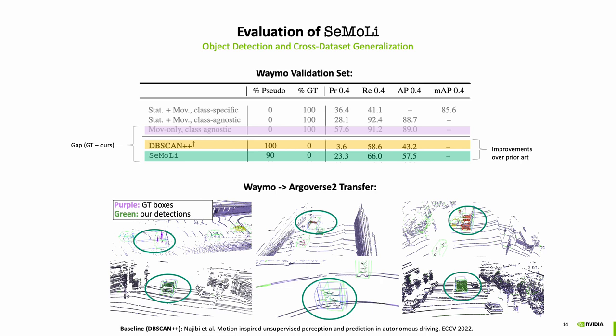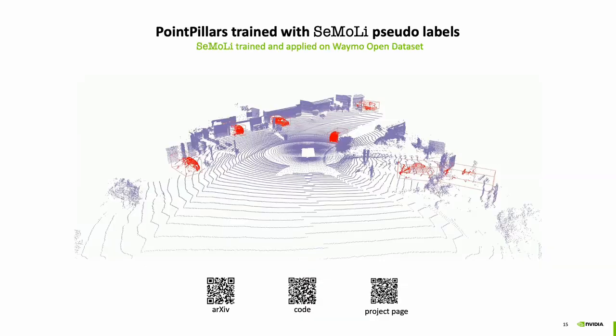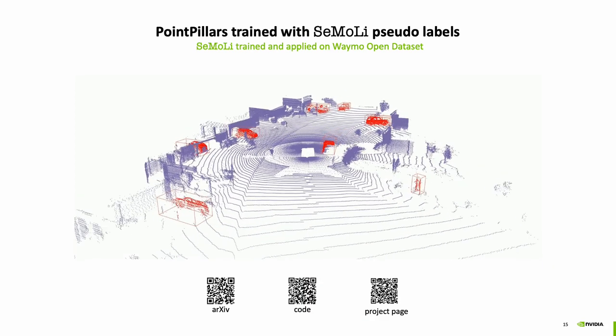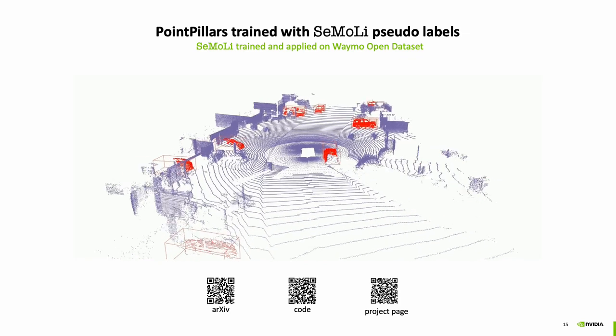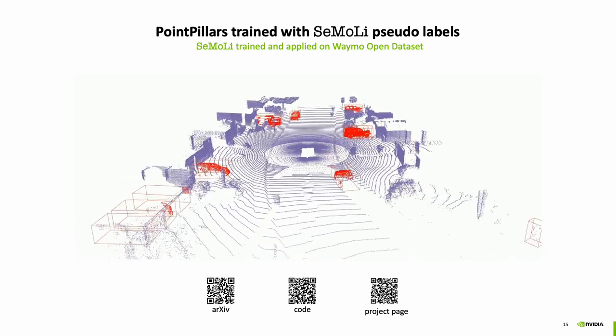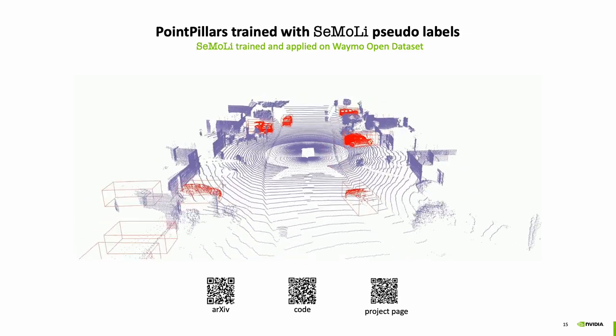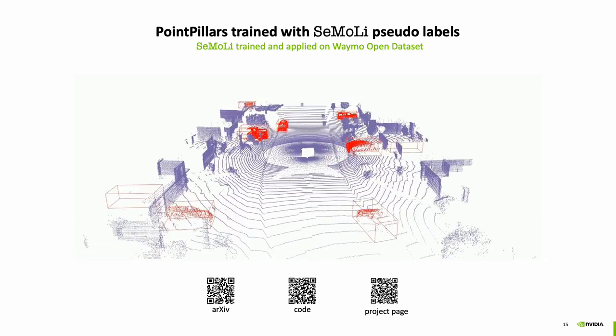Furthermore, we show cross-dataset generalization by training Simoli on the Waymo Open dataset and applying it on the Argoverse 2 dataset to extract pseudolabels. If you are interested and want to know more about Simoli, check out our paper, the code, and the project page.